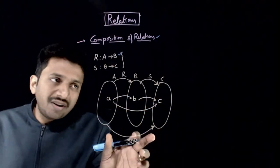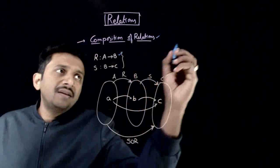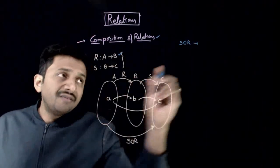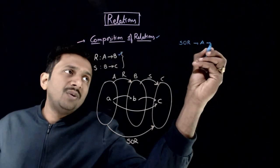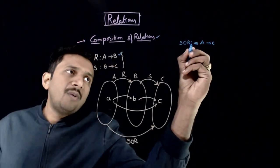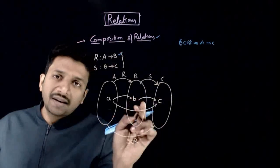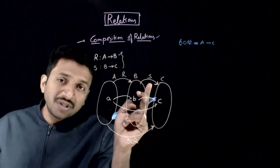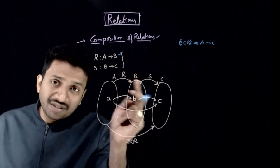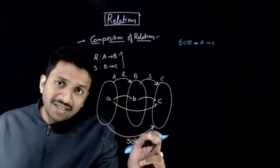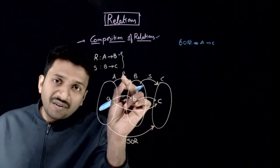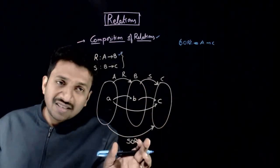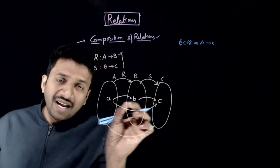A composite relation SOR is defined from A to C. So if you are going from A to C, the composite relation will be SOR — that is the reverse. If I am going in this direction, the name will be in the reverse direction. The composite relation SOR is connecting A to C.